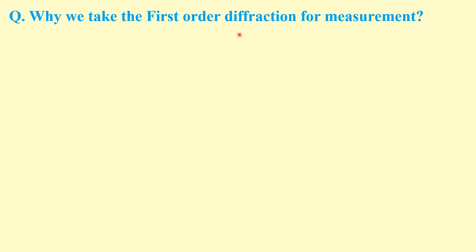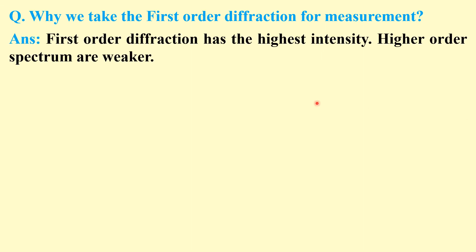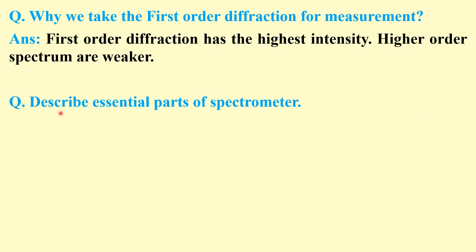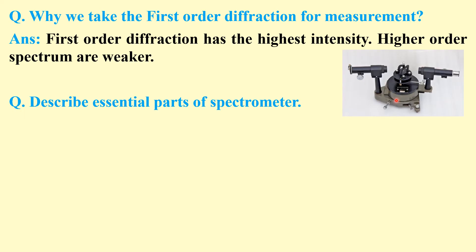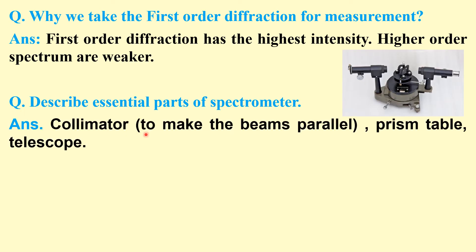We take the first order diffraction for measurement because it is of the highest intensity — higher order spectra are weaker. What are the essential parts of a spectrometer? A spectrometer has three main parts: a collimator to make the beam parallel, a prism table for placing the grating or prism, and a telescope to view the spectrum.